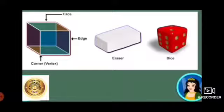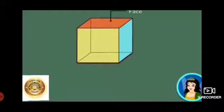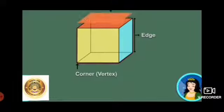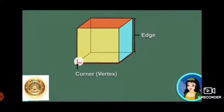We also have another kind of shape — objects like a box, eraser, and dice. These shapes are called solid geometric shapes. Solid shapes have faces, edges, and corners. Here is a solid shape that looks like a dice — this is a cube. It has six flat faces, twelve edges, and eight corners, and all its edges are equal.